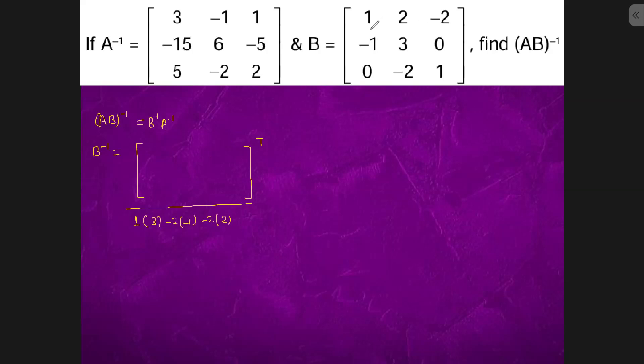Now we have to find the cofactor of 1 which is what? 3. Cofactor of 2, it is minus of minus 1 which is 1. Cofactor of minus 2 is what? 2. Cofactor of minus 1, it is what? 2, minus 4, minus 2 and minus 2, minus of minus is 2. Minus of minus 2 which is 2.